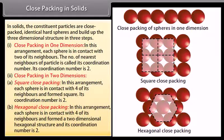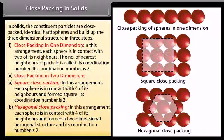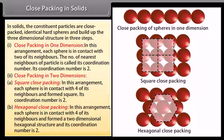Type B is hexagonal close packing. In this arrangement each sphere is in contact with six of its neighbors, forming a two dimensional hexagonal structure. Its coordination number is 6.